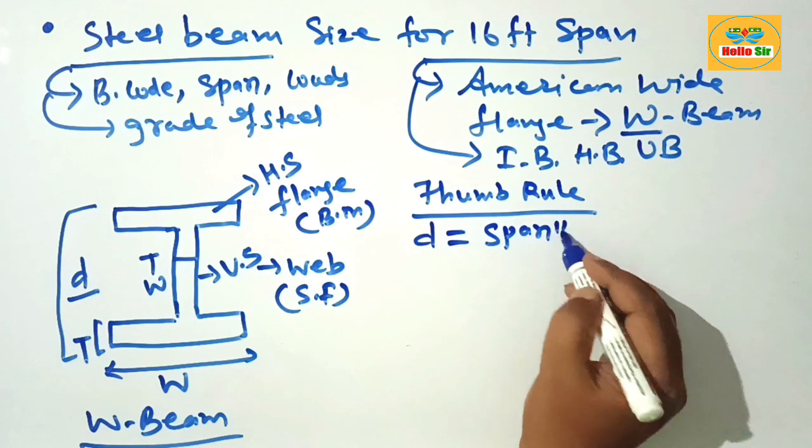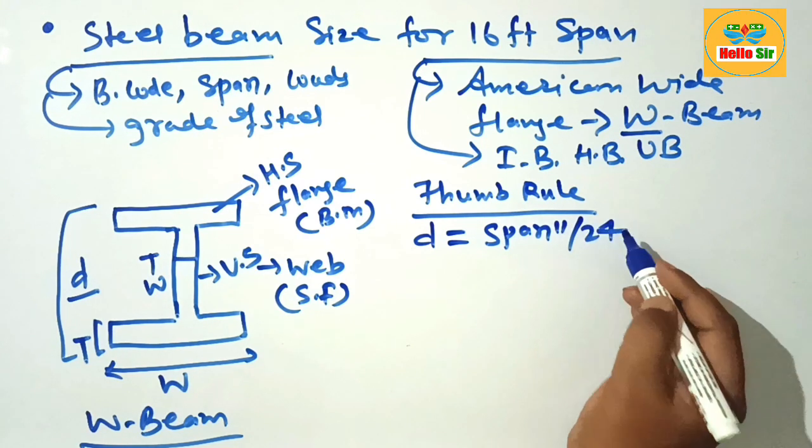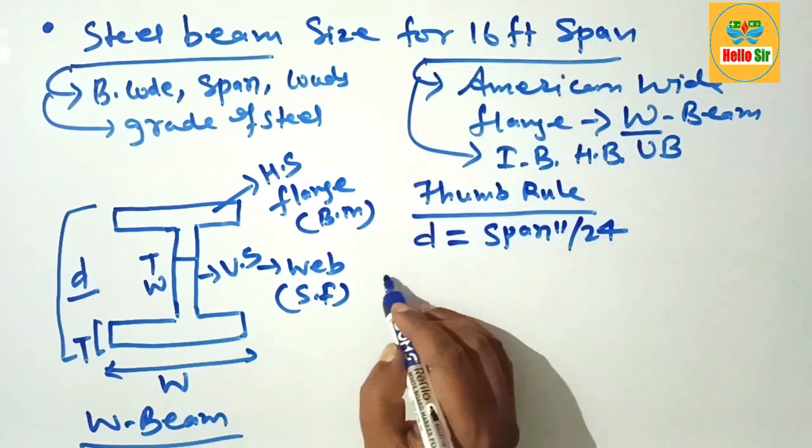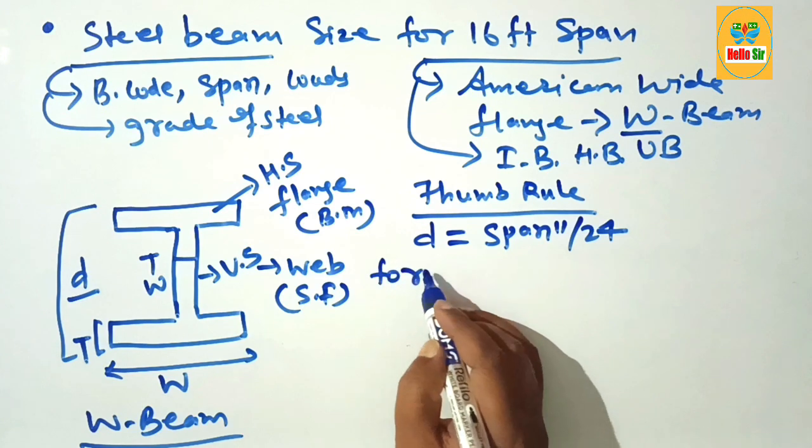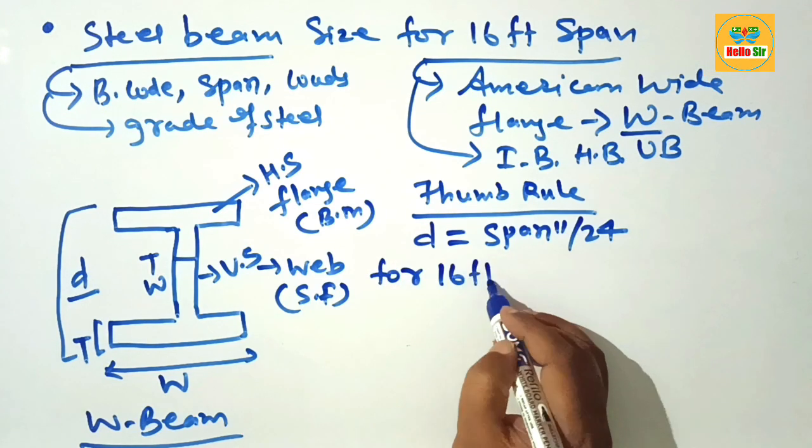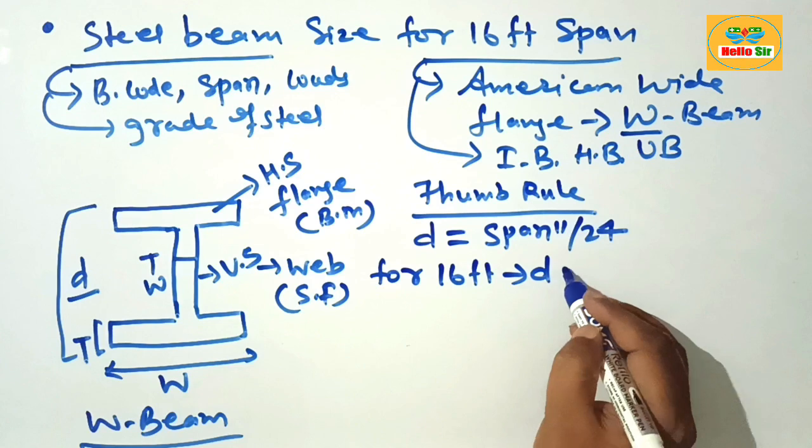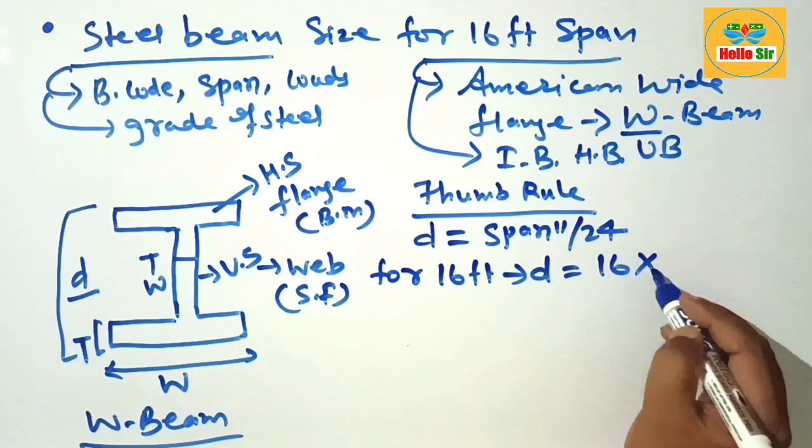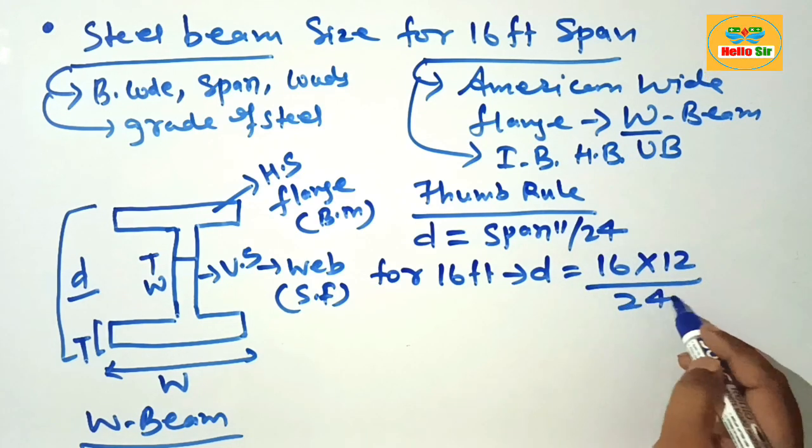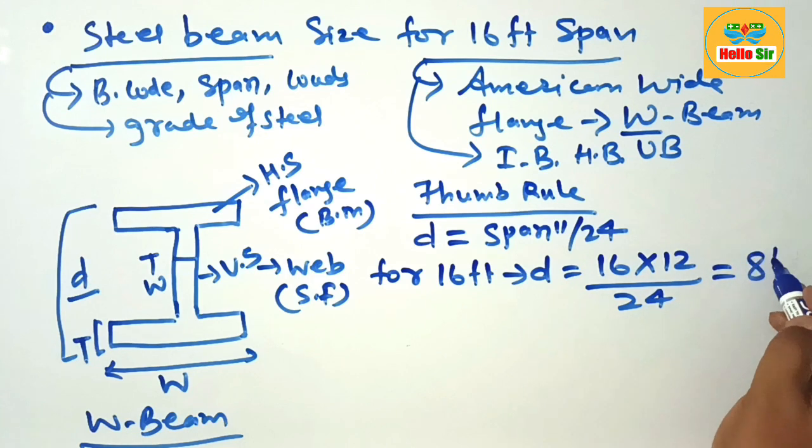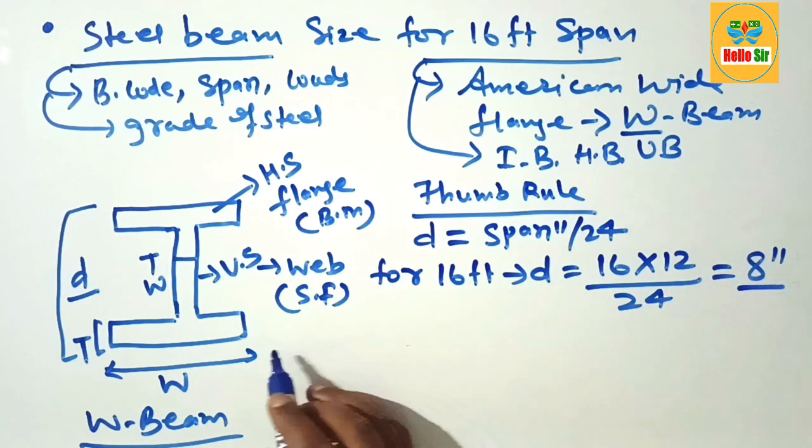Here you have a span about 16 foot. For 16-foot span the depth should be 16 multiply by 12 and divide by 24. This will come about 8 inches.